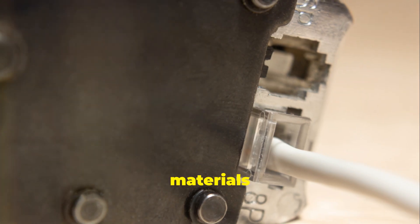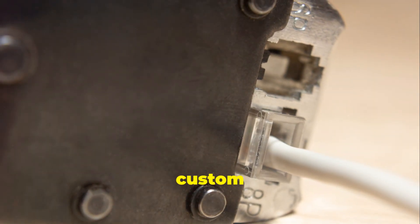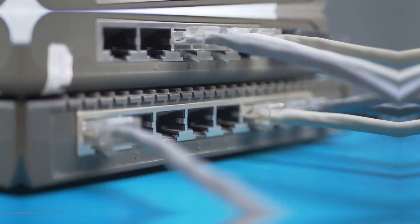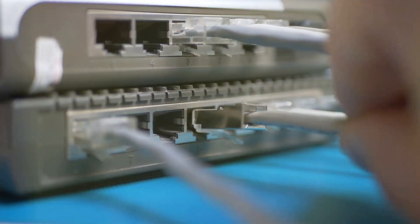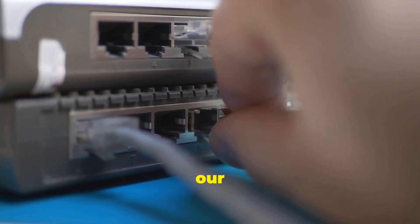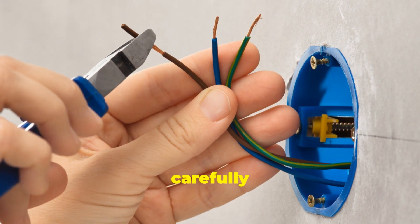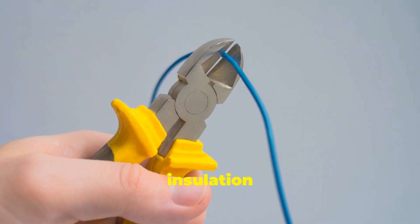All right, time to prep our cable. First, use the wire stripper to carefully remove about an inch of the outer insulation from one end of the ethernet cable. Be careful not to nick the wires inside.